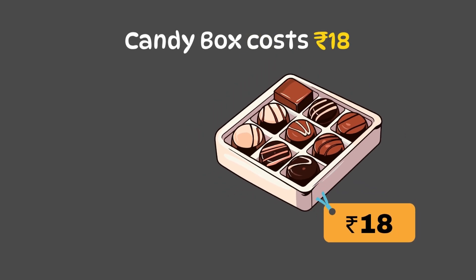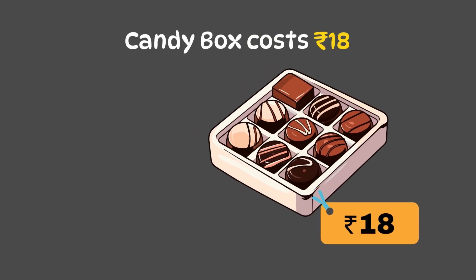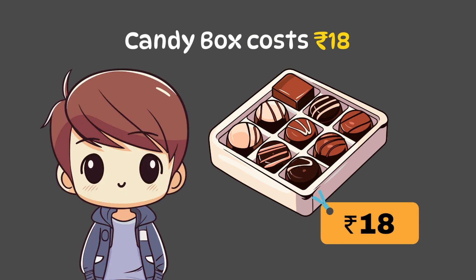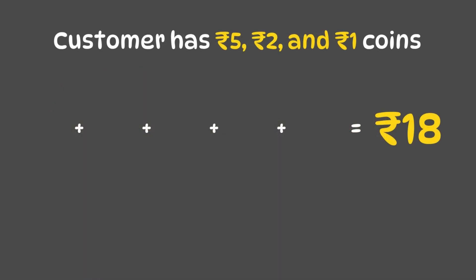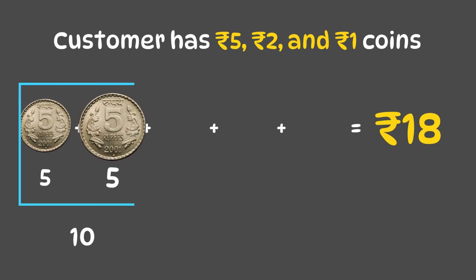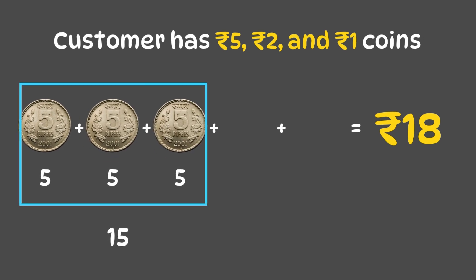Now this candy box costs 18 rupees. Manu has 5 rupee, 2 rupee, and 1 rupee coins. Let's see what we can use. Let's take the bigger number first: 5 plus 5 is 10, plus 5 is 15.